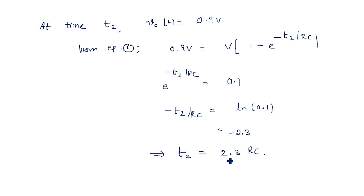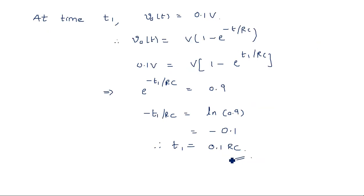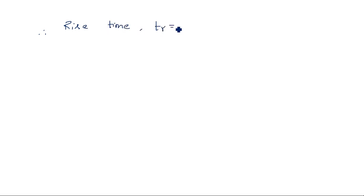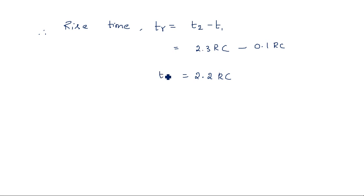Now, the formula for rise time is tr = T2 − T1. T1 = 0.1RC and T2 = 2.3RC. Therefore, rise time tr = 2.3RC − 0.1RC = 2.2 × RC. This is the formula for rise time of a low pass RC network. Remember this formula: rise time for the capacitor to charge from 10% to 90% of maximum voltage is 2.2 × RC seconds.